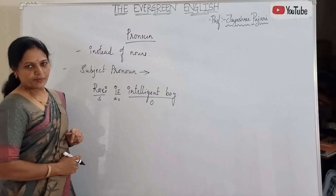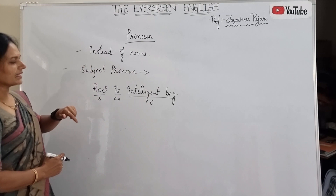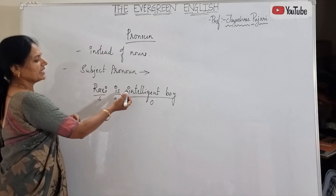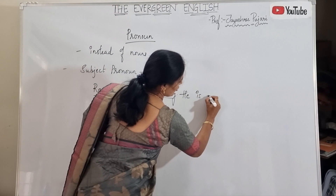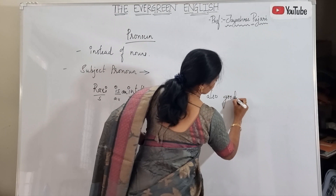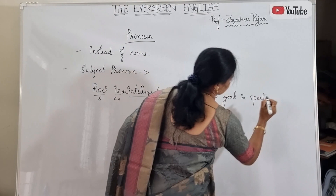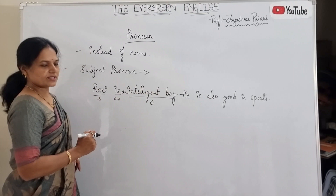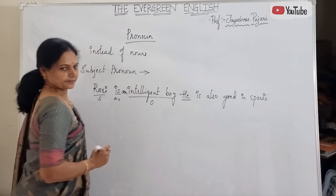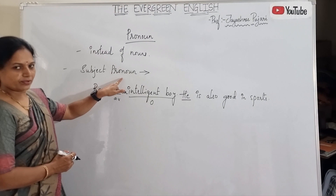Subject pronouns are those which take the place of subjects. For example: 'Ravi is an intelligent boy. He is also good in sports.' Instead of Ravi, I have used 'he.' So 'he' is what we call a subject pronoun — the pronoun has taken the place of the subject.